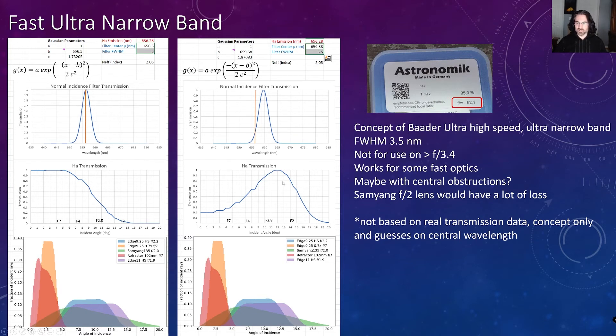These are not based on real transmission data. Again, this was me just using a Gaussian peak and picking some numbers here. So the Baader filters may be better than this, but you're still limited by physics that you're going to have a certain bandwidth and a certain amount of shifting that's going to occur. So with these ultra narrow band filters, yes, you'll be rejecting background, but you're also probably not going to be collecting all of the light that these telescopes, that these optics are providing, especially when you look at something like your Samyang lens, because you're going to be attenuating all of these low incident angles that are being provided by optics that don't have a central obstruction.